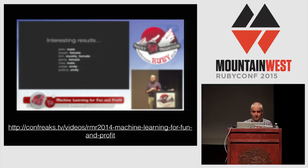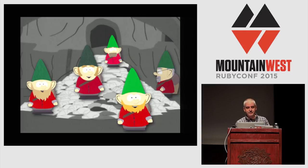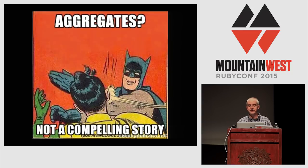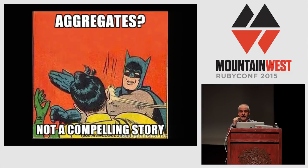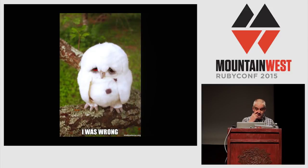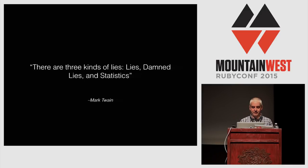Last year I was at Rocky Mountain Ruby, and I was teaching people about using data — there's a bunch of gnomes sitting on a big pile of data trying to figure out how to make a profit. I said that aggregates were not a compelling story because I was talking about more advanced data science techniques. But I've got to admit I was wrong, because I find out that people need to do a better job with basic statistics, and that's what I'm here for.